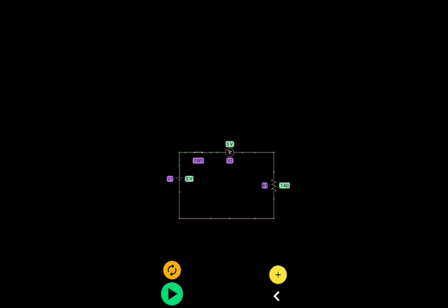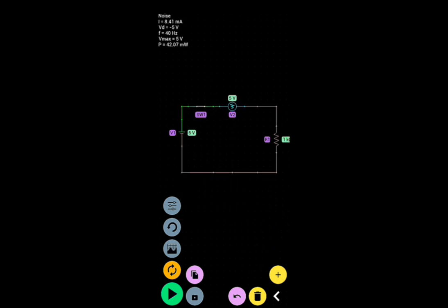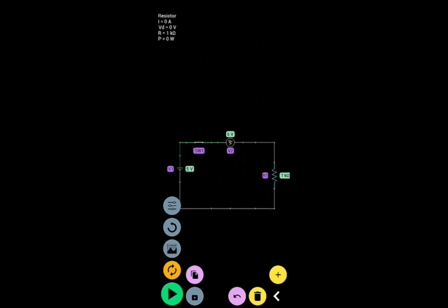This simulation will further explain this. This circuit consists of a 5V power source, a key usually known as a switch and represented here as SW1, a noise indicator, and a resistor of 1 kilohm. When the switch is open, we have an open circuit and when it is closed, we have a closed circuit. Current is flowing through the circuit.